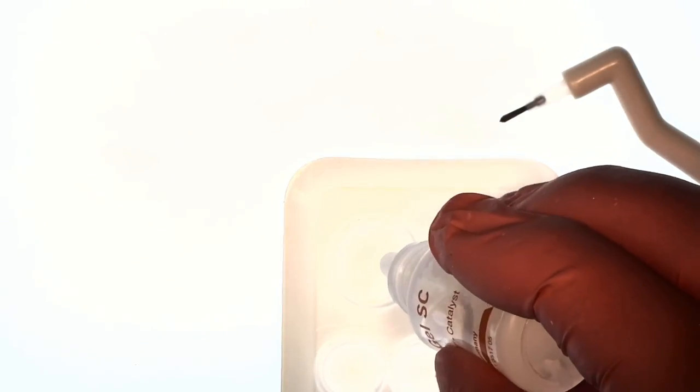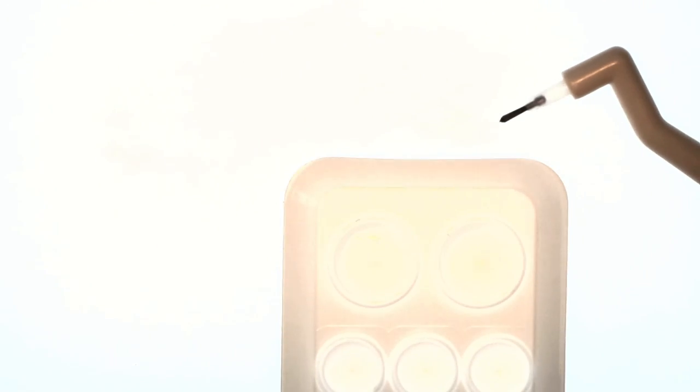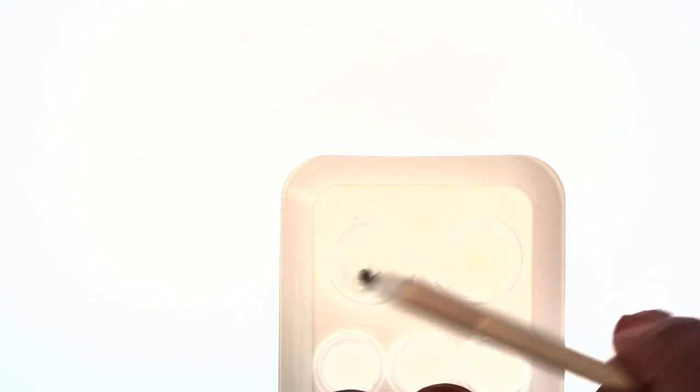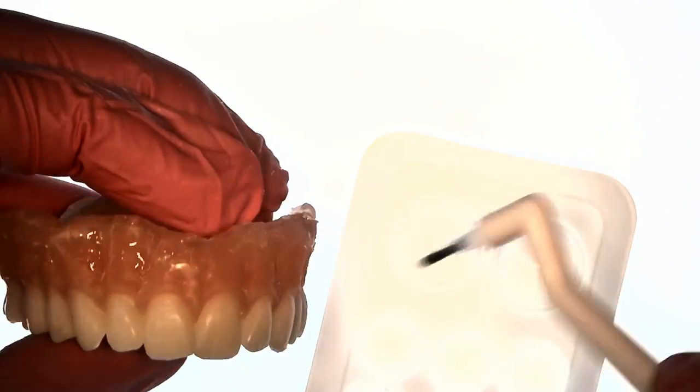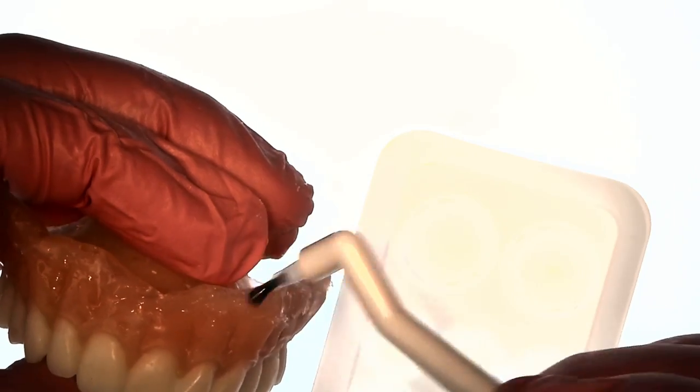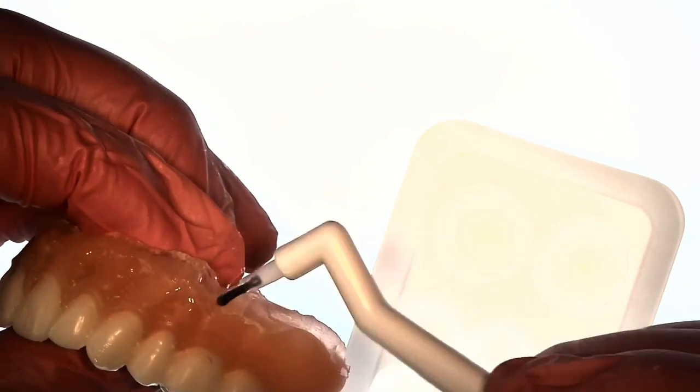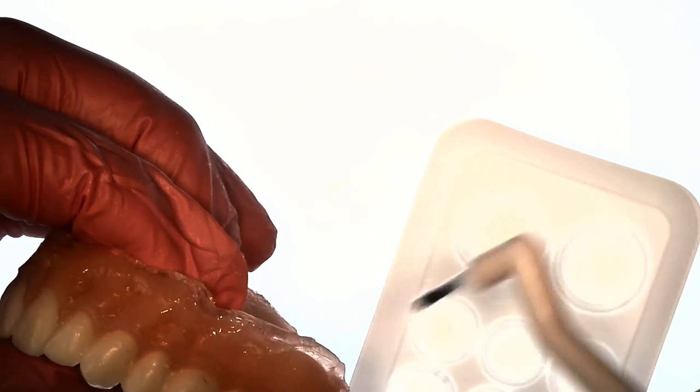The last step is to paint this sealer part one and part two, you mix it together and paint all the areas where the material meets the denture. You don't paint the inside of the denture at all. It's only the seams and this kind of melts those borders and fuses it permanently to the denture.